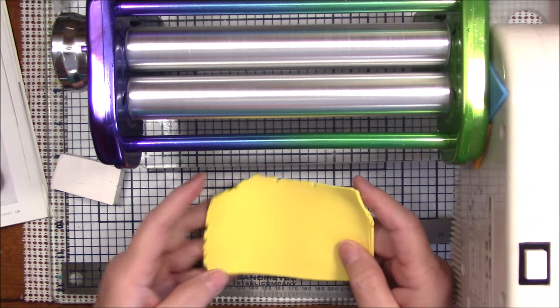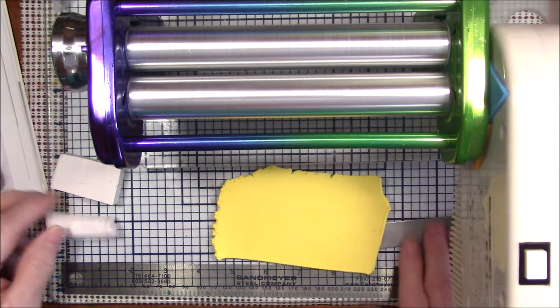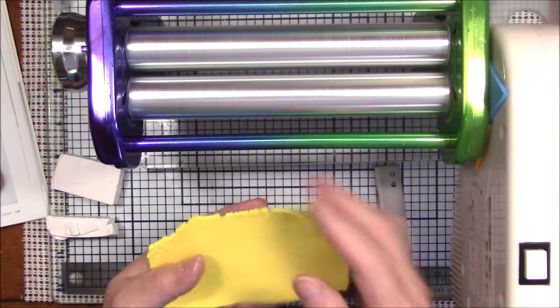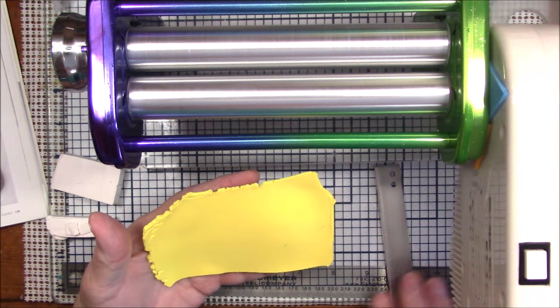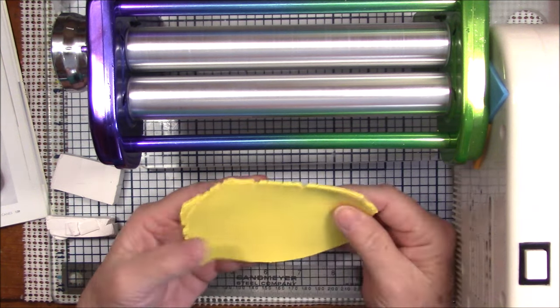And this is a trick that I learned from Donna Cato a long time ago. She was showing us how to do that so that you don't end up with so many ragged edges. You can get rid of a lot of your ragged edges this way.